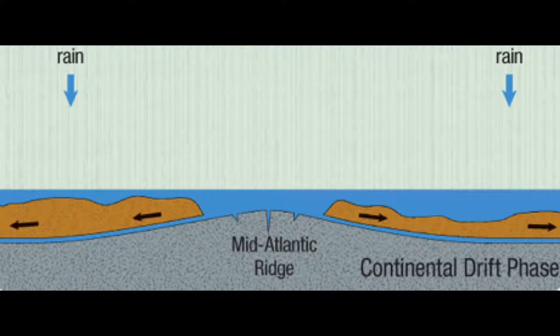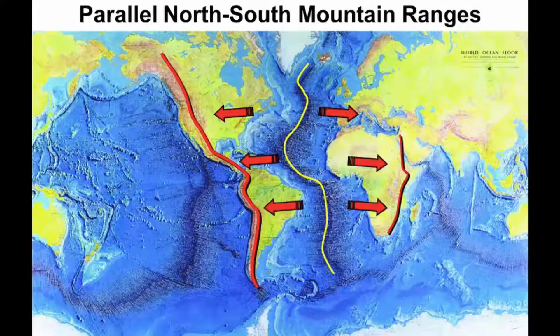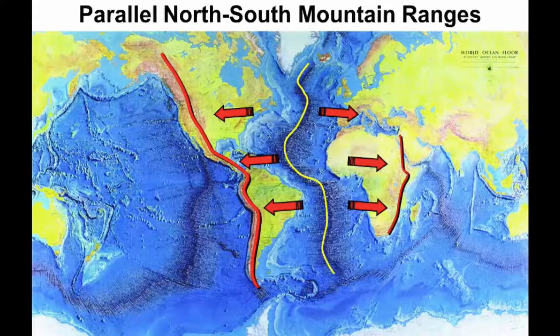Continents are going to start sliding. You've got North America and South America sliding west. You've got Africa and Europe sliding east. And they're going to keep sliding until they run out of water or meet resistance. And that's why the mountain ranges are parallel to the Mid-Atlantic Ridge.